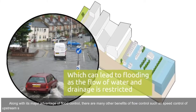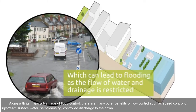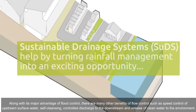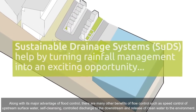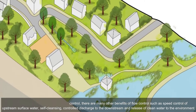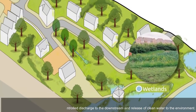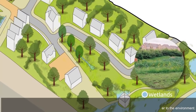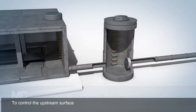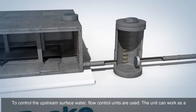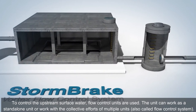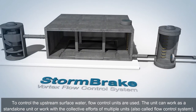Along with its major advantage of flood control, there are many other benefits of flow control such as speed control of upstream surface water, self-cleansing, controlled discharge to the downstream, and release of clean water to the environment. To control the upstream surface water, flow control units are used.